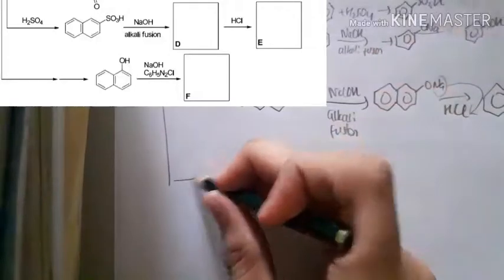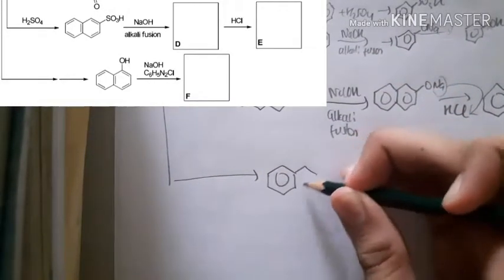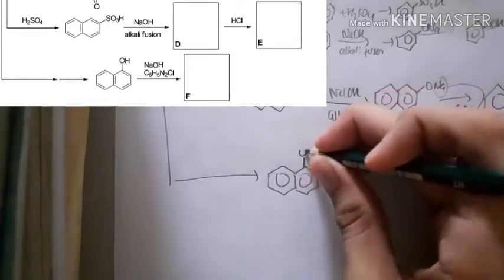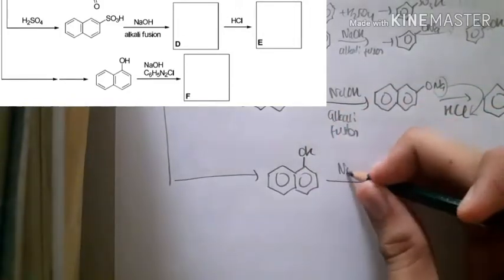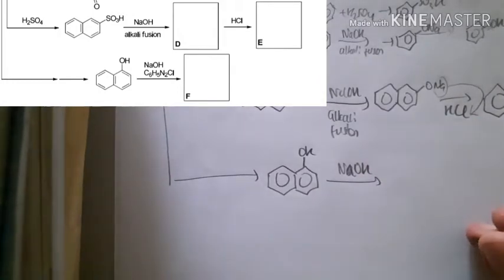From naphthalene it turns into naphthol, and it's reacted with NaOH sodium hydroxide. We know what that compound is.